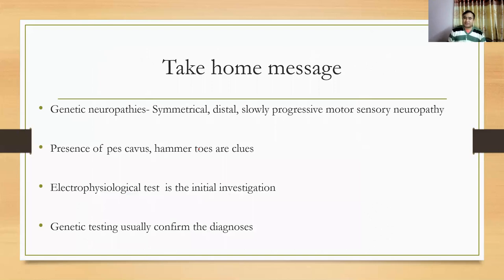Genetic neuropathies typically present as symmetrical, distal, slowly progressive motor-sensory neuropathies. Positive symptoms are minimal, and the patient may have loss of proprioception. If you see pes cavus, hammertoe, or claw hand, these features give a strong clue toward the diagnosis of hereditary neuropathies.